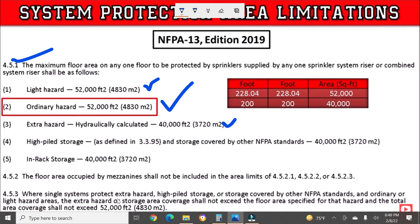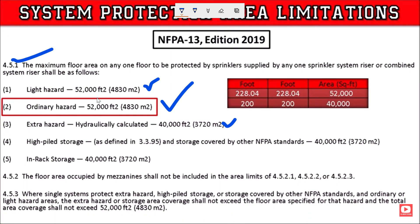The total area covered for mixed light hazard, ordinary hazard, and extra hazard shall not exceed the specified square footage per NFPA 13. The combined total area covered shall not exceed the limits defined, and the design must stay within these constraints to ensure adequate sprinkler protection.